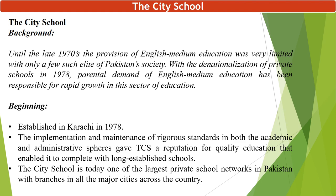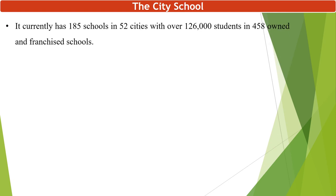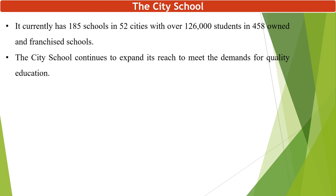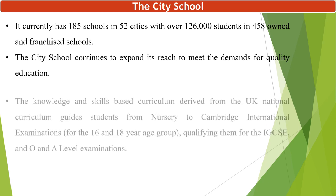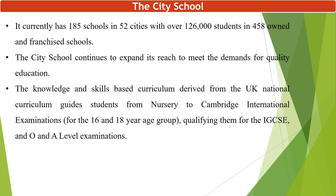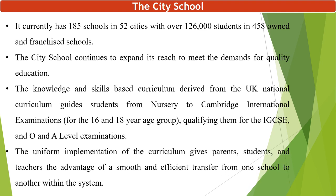The City Schools is today one of the largest private school networks in Pakistan, with branches in all major cities across the country. It currently has 185 schools in 52 cities with over 126,000 students in 458 owned and franchise schools. The City Schools continues to expand its reach to meet the demand for quality education. The knowledge and skills-based curriculum derived from the UK National Curriculum guides students through to Cambridge International Examinations for the 16 and 18 age groups, qualifying them for IGCSE O-level and A-level examinations. The uniform implementation of the curriculum gives parents, students, and teachers the advantage of smooth and efficient transfer from one school to another within the system.